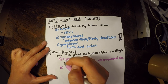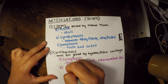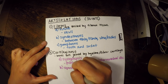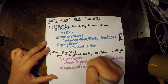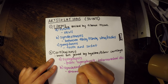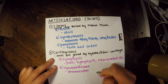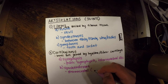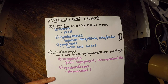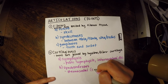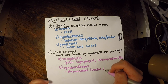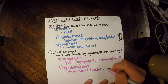The second type of cartilaginous joint is a synchondrosis. An example is the sternocostal joint — the sternum linked to the ribs. 'Sternum' plus 'costal' meaning ribs, and they're linked by costal cartilage, drawn in that maroon color when we drew the ribs.